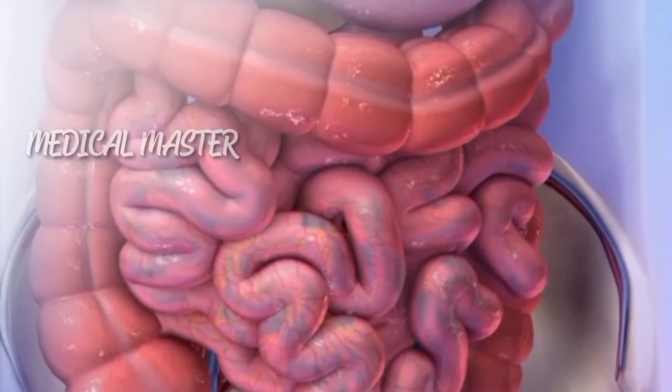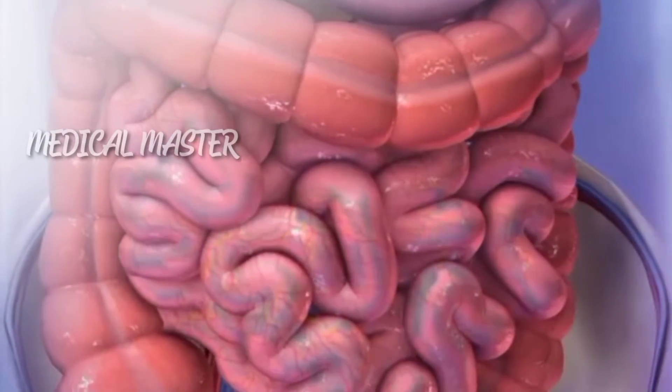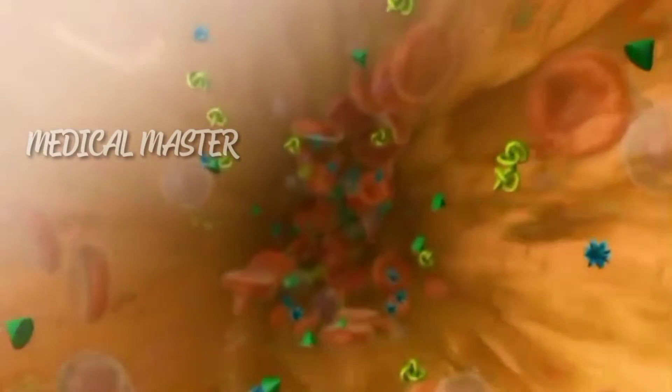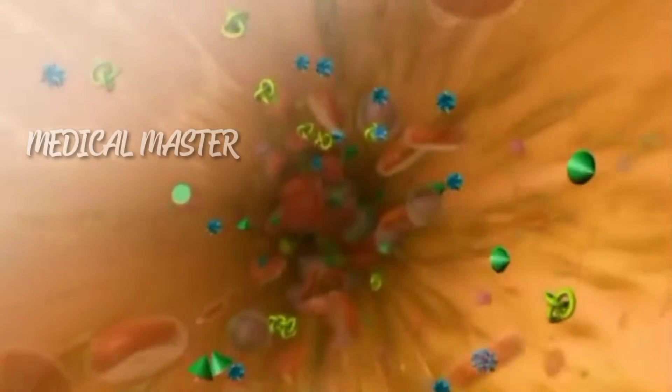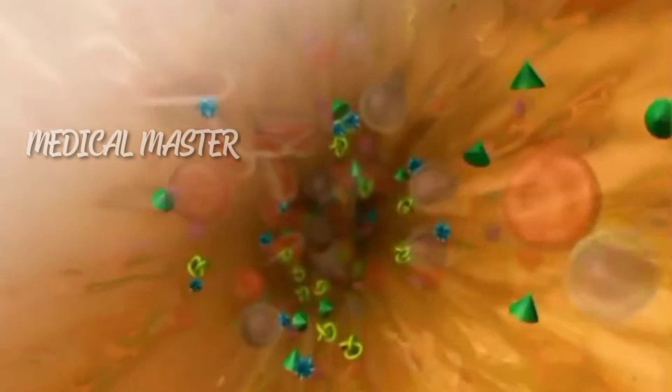Nutrients that pass from the digestive system into the body are transported in the blood plasma. These nutrients include glucose, amino acids, vitamins, minerals, and fatty acids.